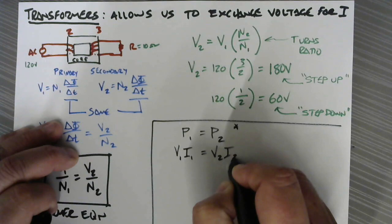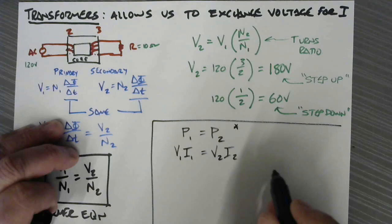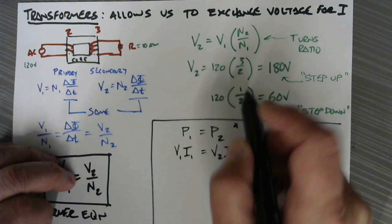So in our step-up transformer example, we had an increase in voltage, so we're going to have a decrease in current. So let's do a quick little calculation here off to the side. We had 180 volts on our secondary side for our example that's depicted here.